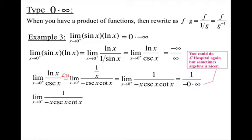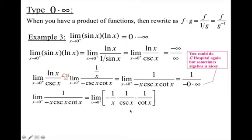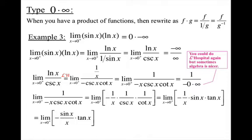I can rewrite cosecant and cotangent as separate fractions. Since 1/cosecant is sine and 1/cotangent is tangent, I can rearrange to get sin(x)/x — one of the special limit properties, where the limit as x→0 of sin(x)/x equals 1. Now when I plug in 0, I get negative 1 times tan(0), and tan(0) is 0. So my answer is 0.